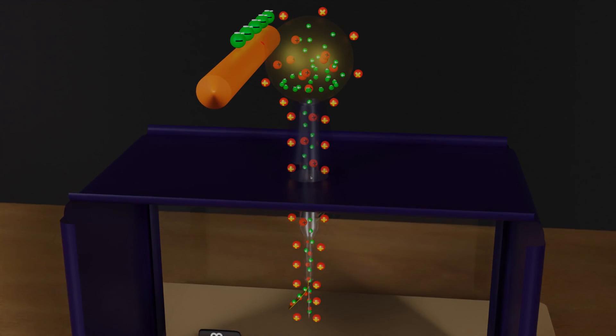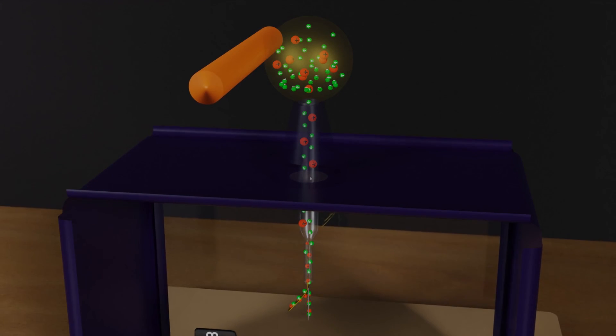This happens because when we touch the conducting sphere of the electroscope, some electrons transfer from the object to the electroscope, neutralizing the effect of the positive charges generated in the electroscope.